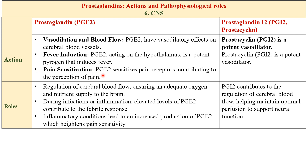For pain sensitization: prostaglandin E2 sensitizes pain receptors. When there is tissue damage or inflammation, increased prostaglandin E2 enhances the sensitivity of these receptors, making them more responsive to painful stimuli. This increased sensitivity contributes to the perception of pain associated with inflammatory conditions. Prostaglandin E2 and I2 both have vasodilatory effects in the CNS, contributing to dilation of blood vessels and promoting increased blood flow to support neural functions, ensuring adequate oxygen and nutrients are supplied to the brain.